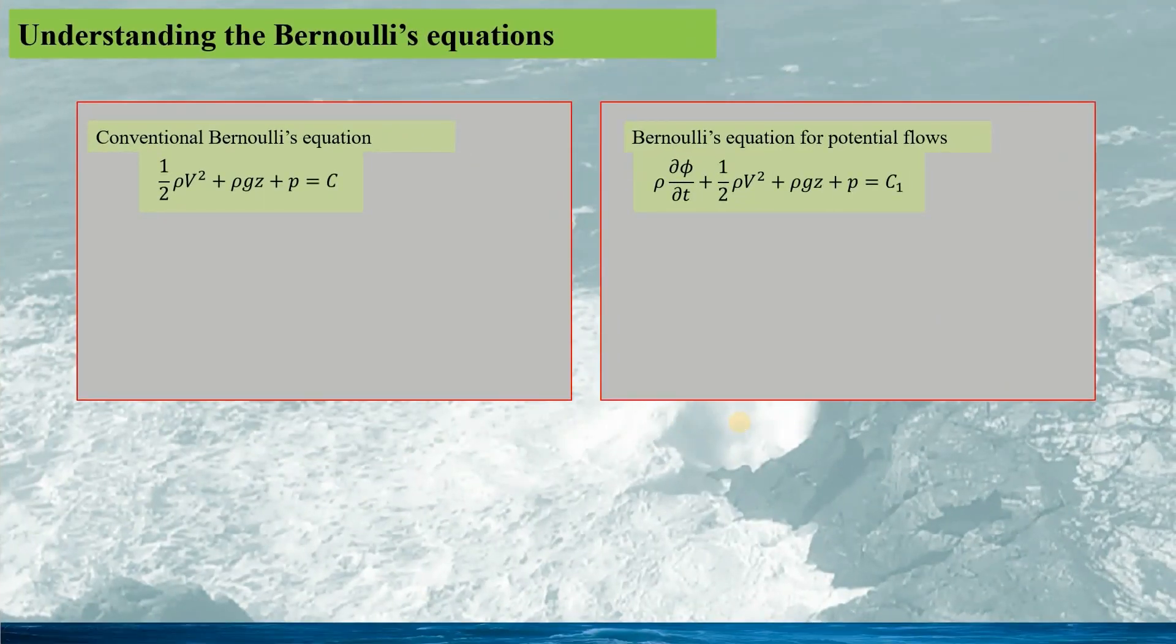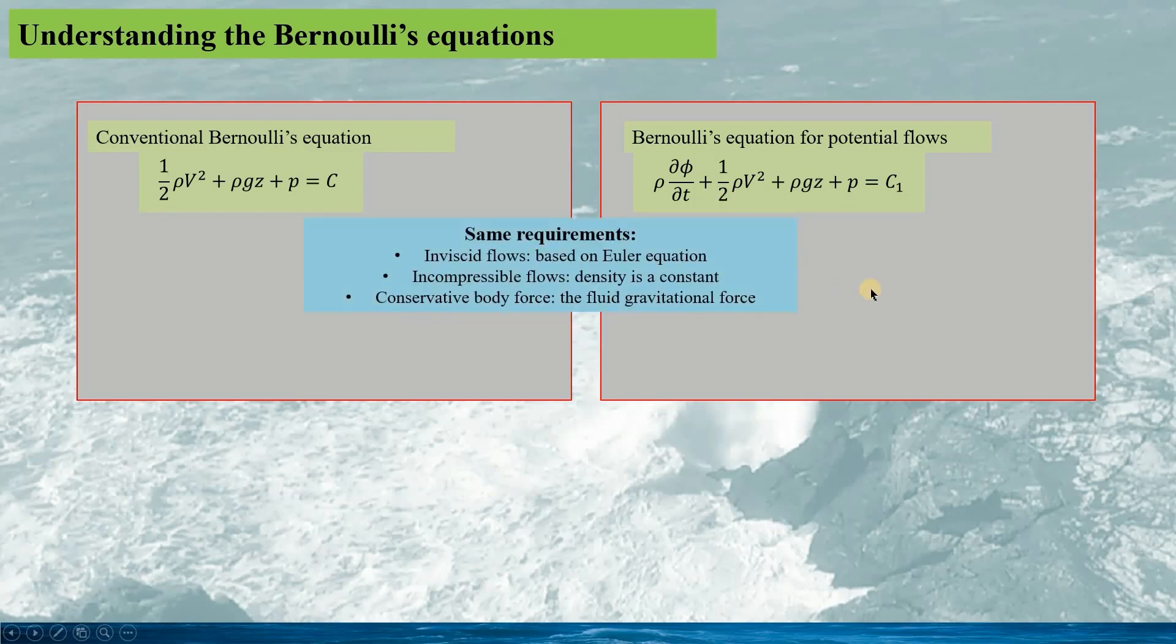In modern flow dynamics, there are different forms of Bernoulli's equations, such as the conventional Bernoulli's equation for inviscid flows, and the Bernoulli's equation for the potential flow. For both of the Bernoulli's equations, they have same requirements.